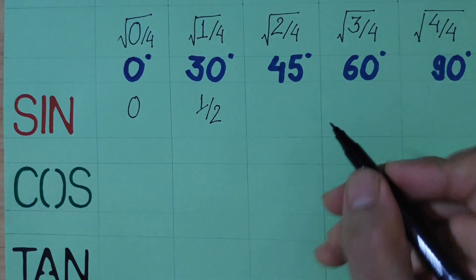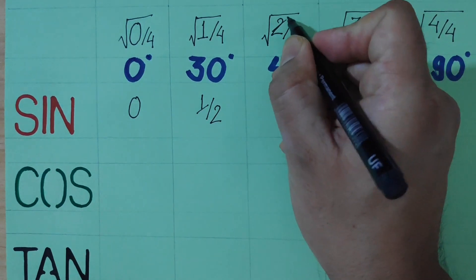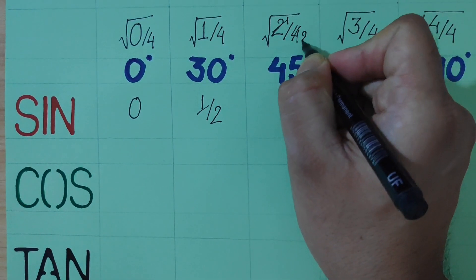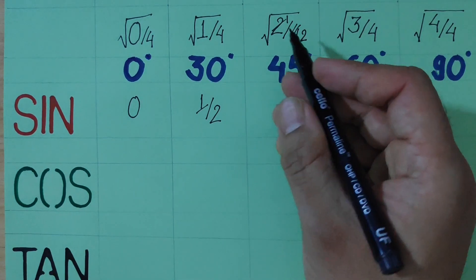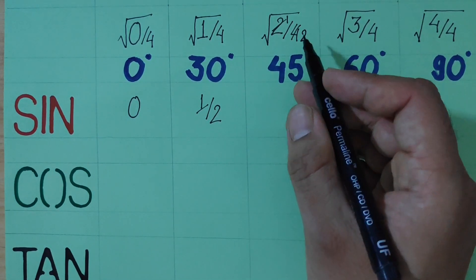Now sin 45. To simplify 2 over 4, which is 1 over 2, square root is 1 over root 2. Sin 45 is 1 over root 2.